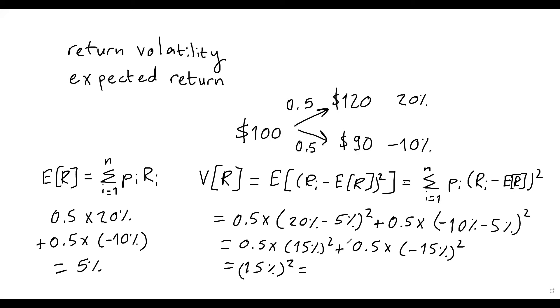And that is going to be, I believe, 2.25%. And now to get the return volatility, I need to take the square root of this. And I can see that if this is 15% squared, of course, the square root of that will be simply 15%. So this is the standard deviation of the return, so return volatility, which is 15%.